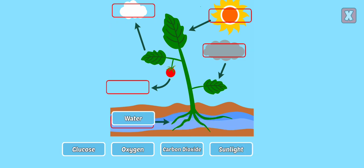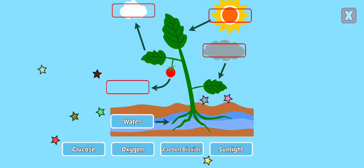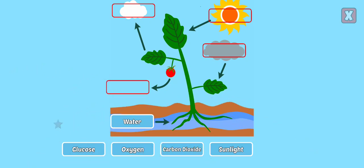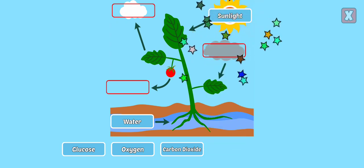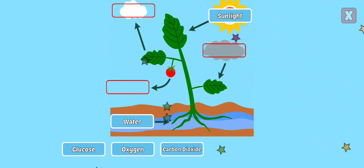Water. Water is absorbed by the roots of the plant and passes up the stem on its way to the leaves. Sunlight is absorbed by the green leaves of the plant.